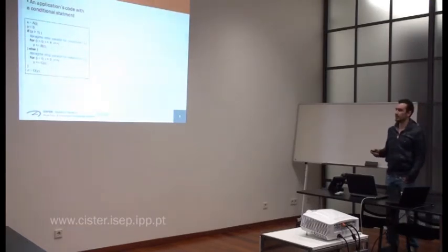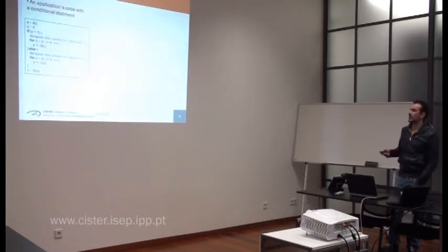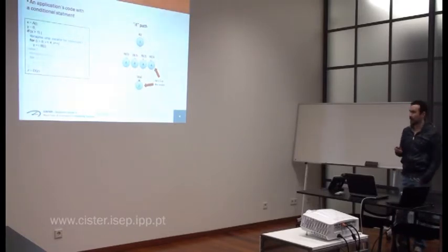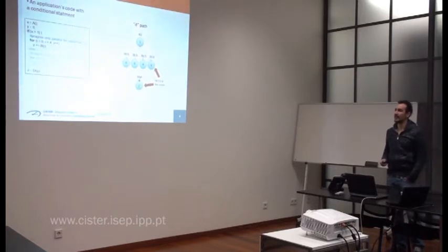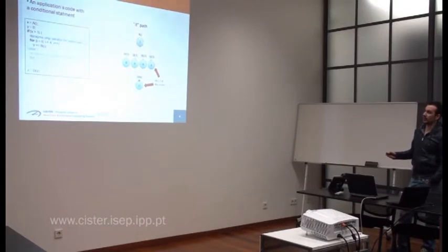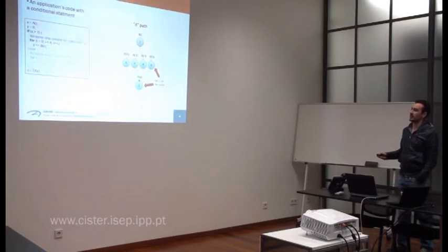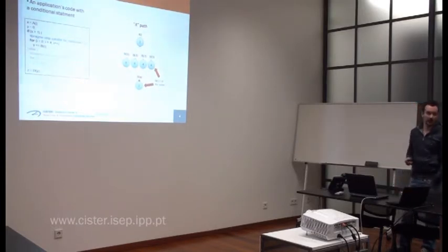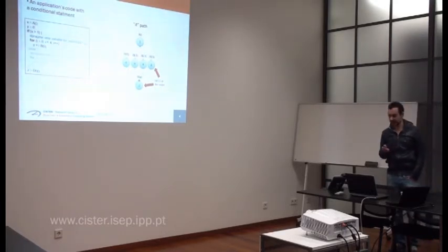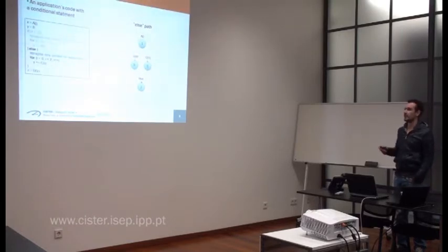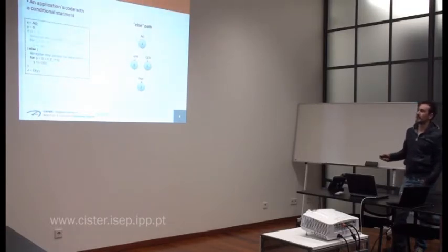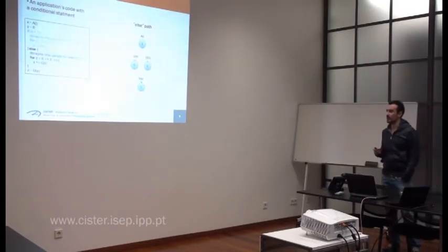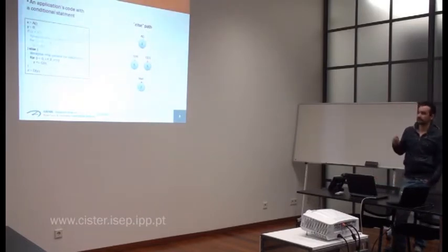When this application runs — and each run is called a job in real-time systems — two different things may happen for each job. The application can enter the if clause, giving a DAG with nodes of A, then 4 instances of B, synchronized on D. This is one path. Or it goes for the else clause, giving a different DAG: node A, then two nodes of C, synchronized on D. So there are two different DAGs that can happen on each instance of the task.